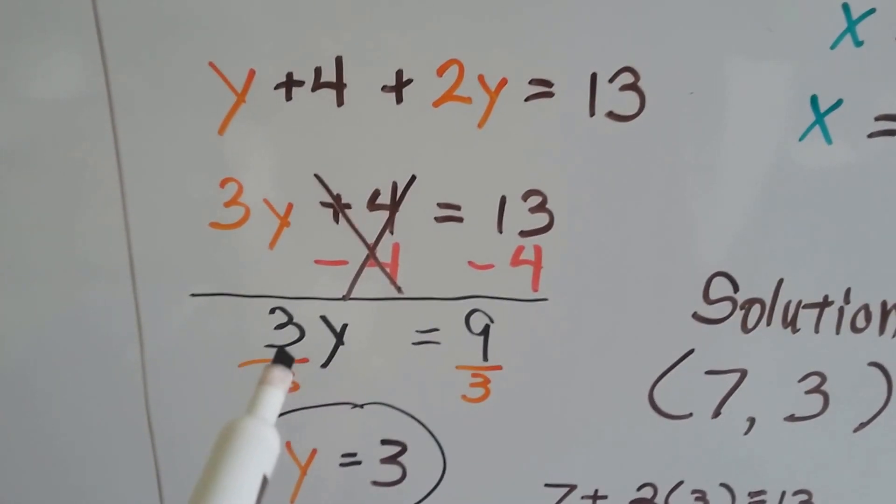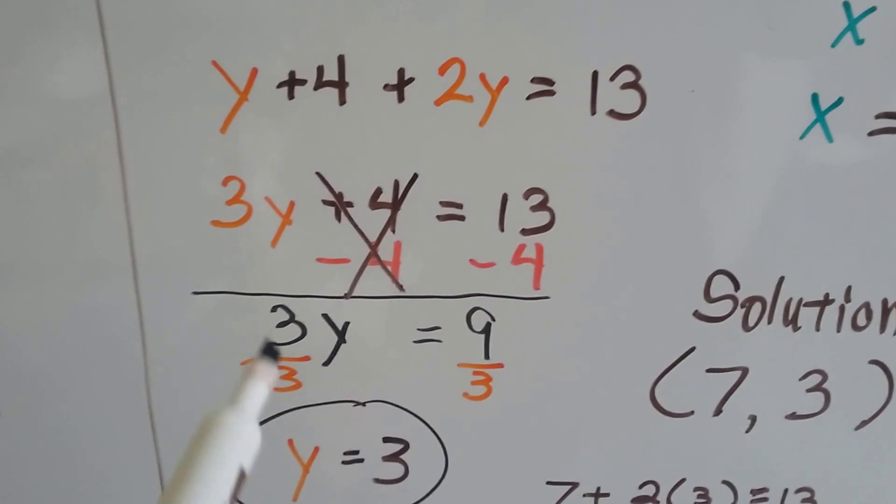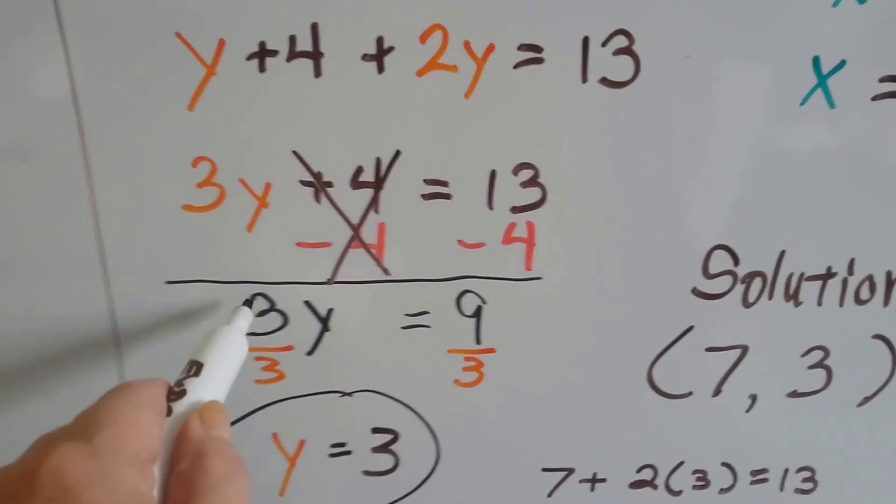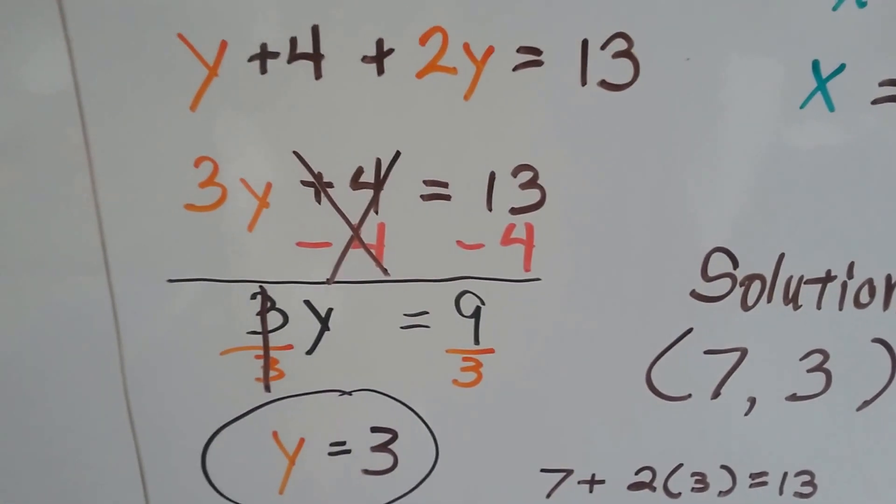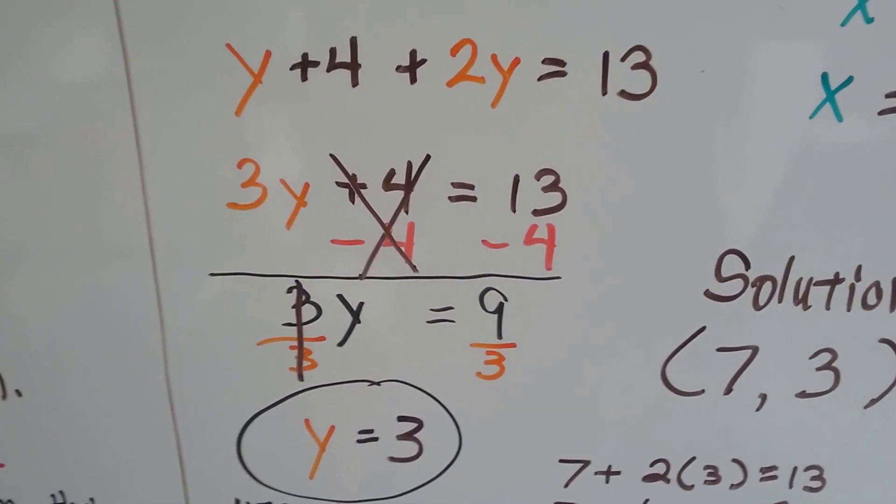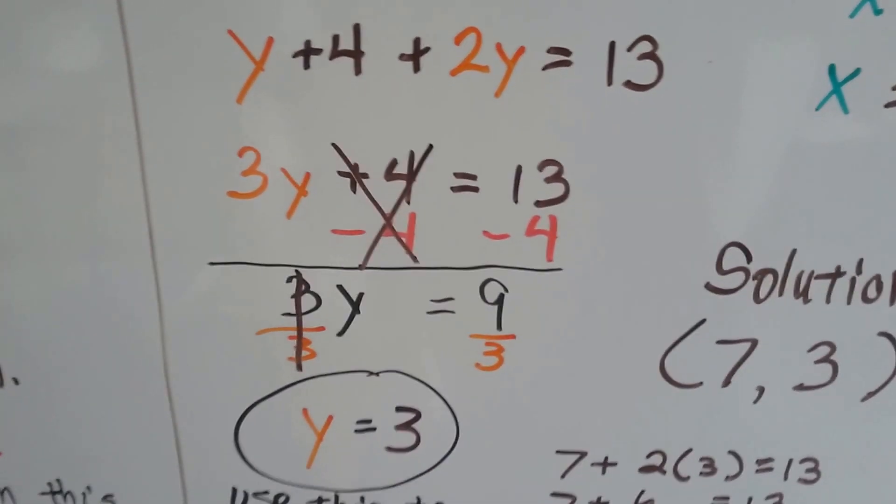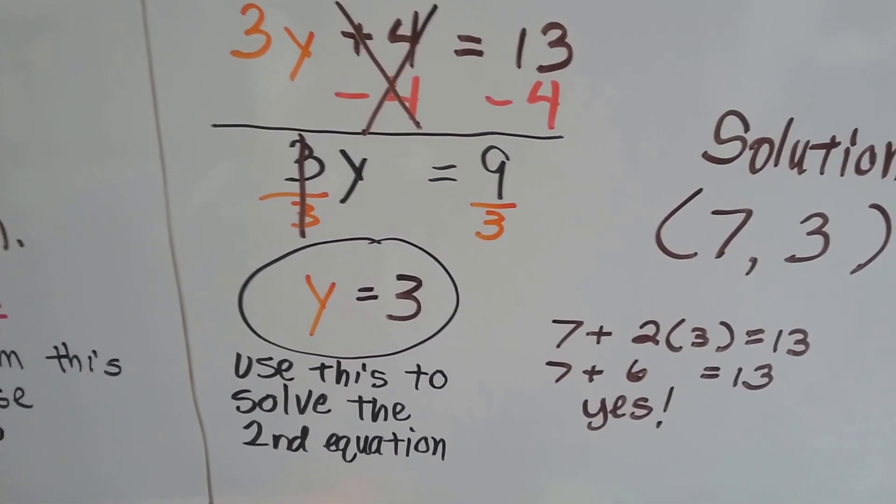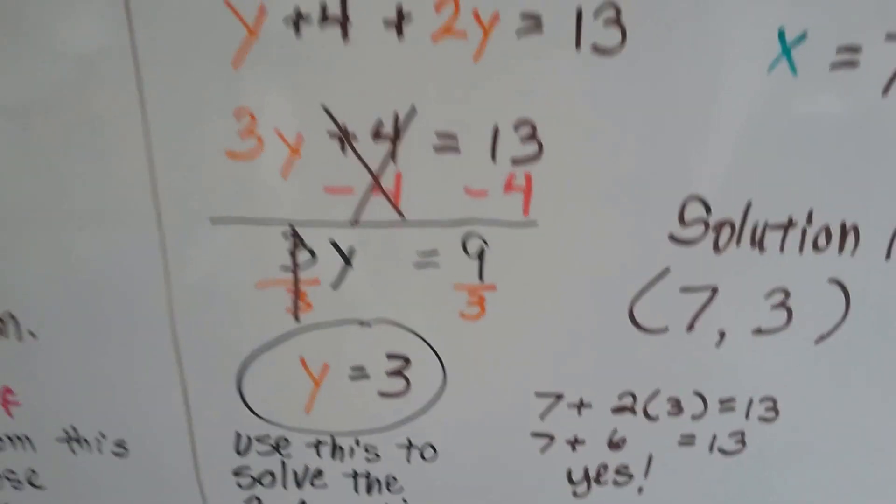Now we divide each side of the equal sign by this 3, the coefficient for y and identity property. This turns into our friend the invisible one. So we got y is equal to 3 because 9 divided by 3 is 3. Now we can use this to solve the second equation because now we know that y equals 3.